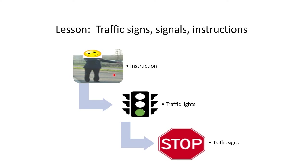The second priority is traffic lights or traffic signals. In the absence of instructions, you have to follow the traffic lights. If it's green, you go; if it's red, you stop — irrespective of whether the traffic sign says stop or says it's a priority road and you can continue.